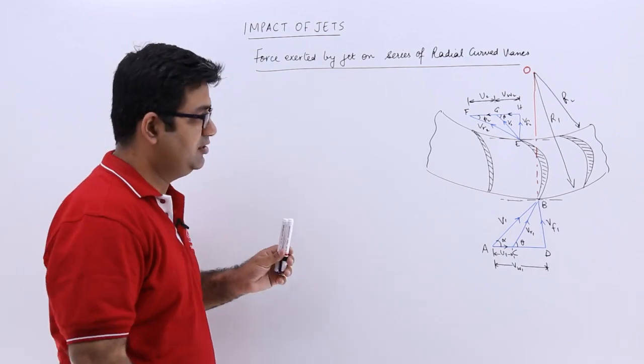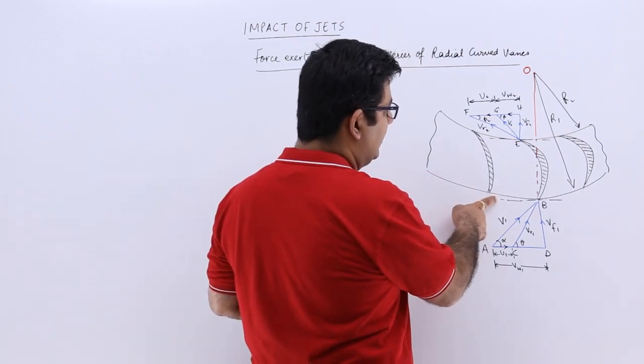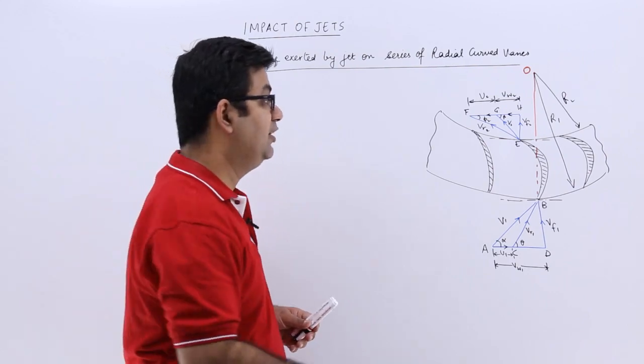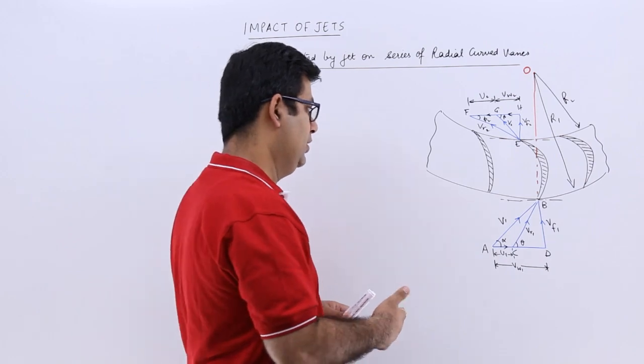Now a very important difference in this arrangement is that the tangential velocity at inlet and the tangential velocity at outlet are different because the radius of this blade is different at inlet and outlet.